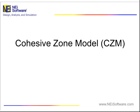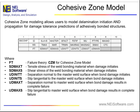Cohesive zone modeling is a pretty hot topic and really a key enabler for a lot of composite analysis. It allows users to model delamination initiation and propagation of adhesively bonded structures. So it allows you to answer questions such as: how fast will my crack grow? Is my crack going to reach a critical length? And what type of loads are going to cause my crack to grow in my particular structure?